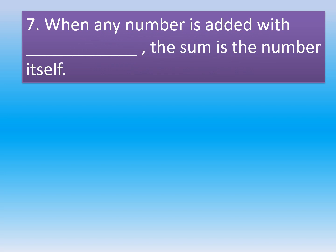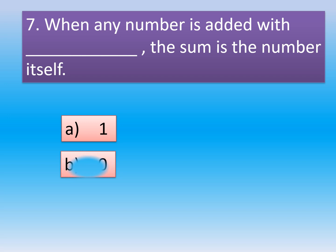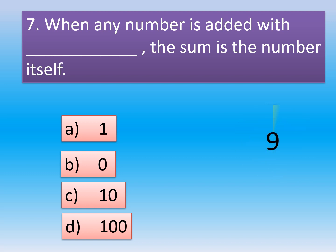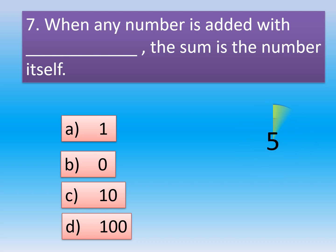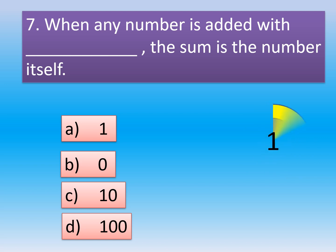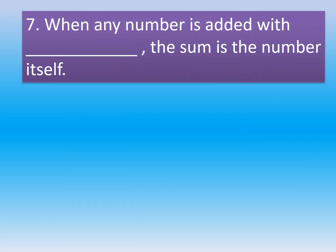Question 7: When any number is added with dash, the sum is the number itself. Option A: One. Option B: Zero. Option C: Ten. Option D: Hundred. The correct option is Option B, Zero. When any number is added with zero, the sum is the number itself.